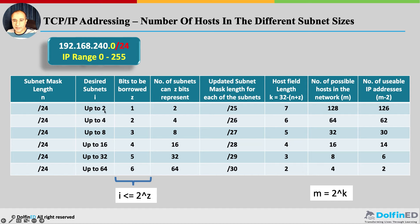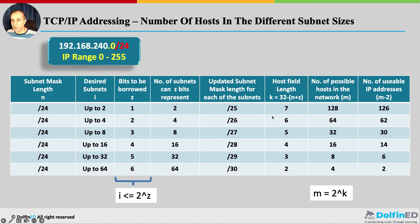Here's a guiding table: to divide your range by two, increase the subnet mask by one (e.g., /24 becomes /25) — you get two halves of 128 addresses each. To divide by four, increase by two (/26) — four subnets of 64 each. To divide by eight, increase by three; by sixteen, increase by four. Starting from /8: divide by two gives /9, divide by four gives /10, and so on.